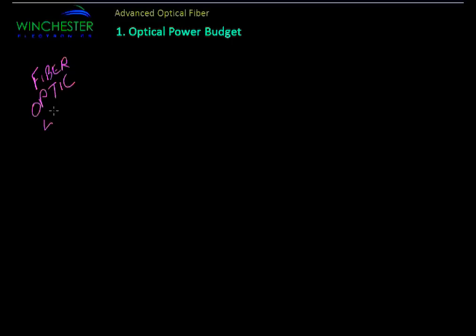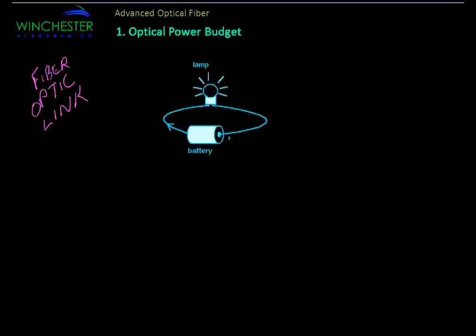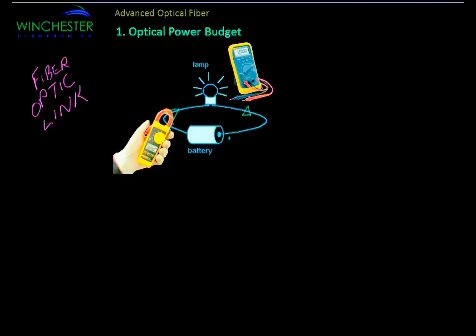Fiber optic links are very different to electrical links. For example, in this picture of a battery and a lamp, the electrical current flows through the wires into the lamp and back through the battery, so we have a kind of a loop. We can put a voltmeter onto the lamp or onto the battery to measure how many volts are appearing on the wire, or we can put an ammeter in the line and measure how much current is going through it.